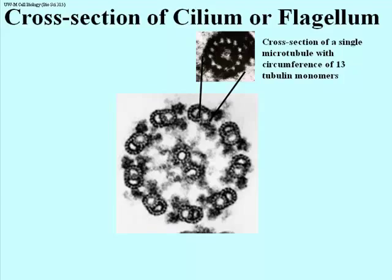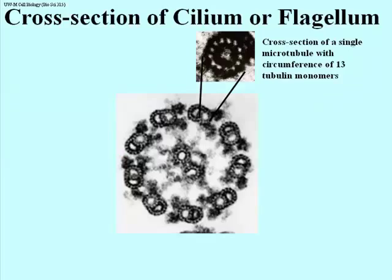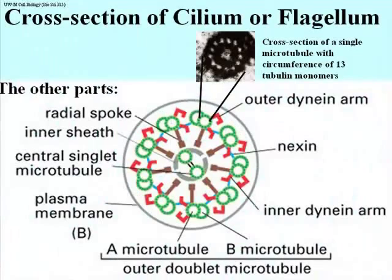Taking a cartoon from the textbook, this structure has many parts. There are nine doublet microtubules in the circumference of this cilium or flagellum, two single microtubules in the middle, and various other structures. The doublet microtubules are connected to one another by blue structures called nexin. The doublets also have motor proteins — dynein, in fact two dynein molecules on each doublet. We talk about an outer and an inner dynein arm. These are the motor proteins that can extend from one doublet to the next, allowing one doublet to move along the other.